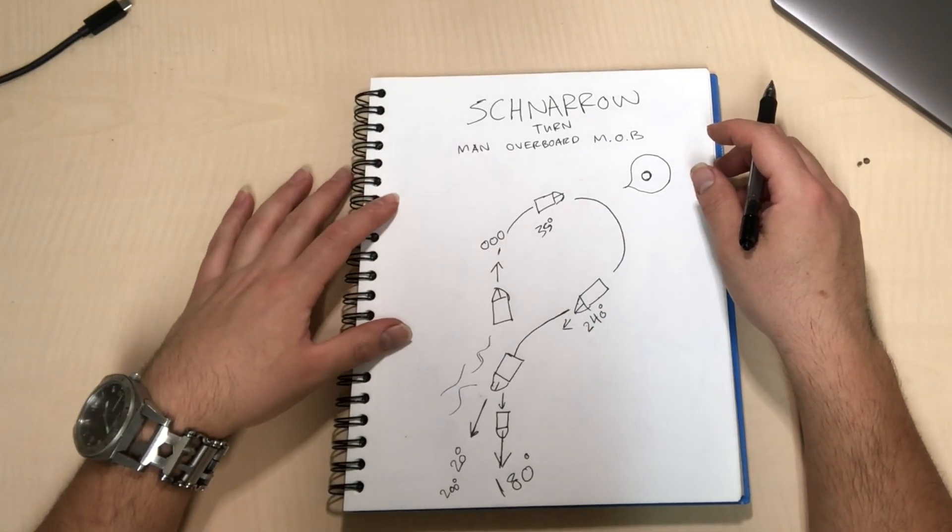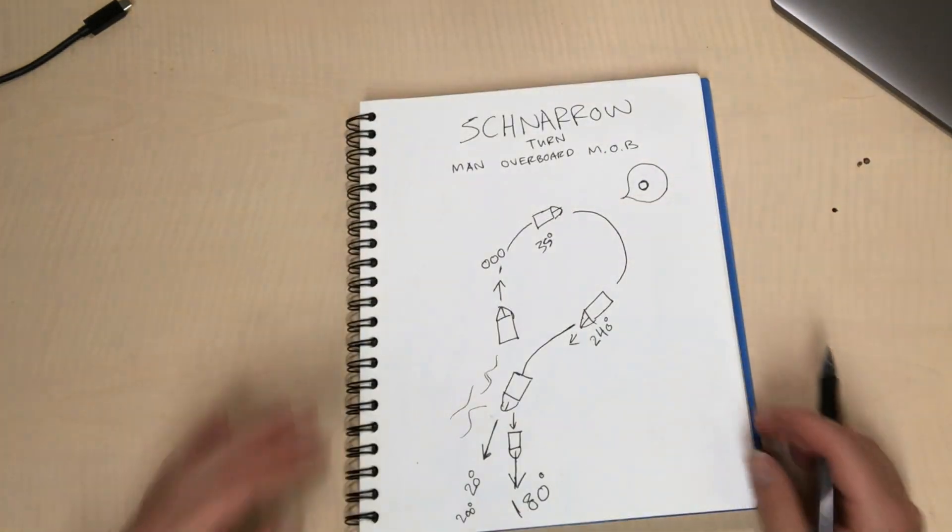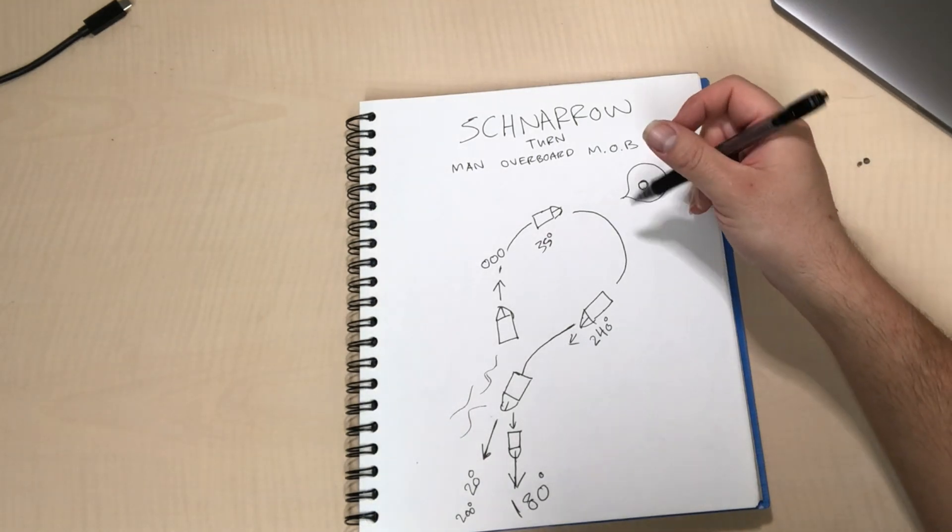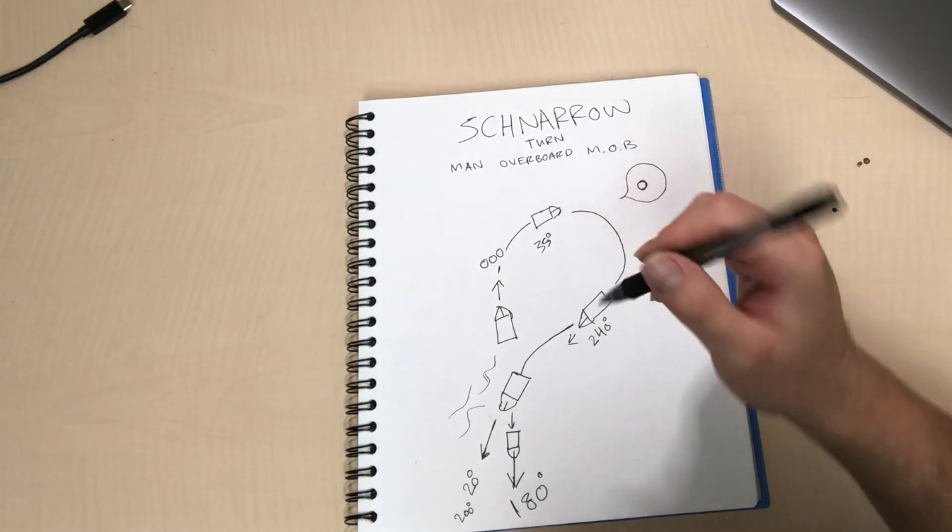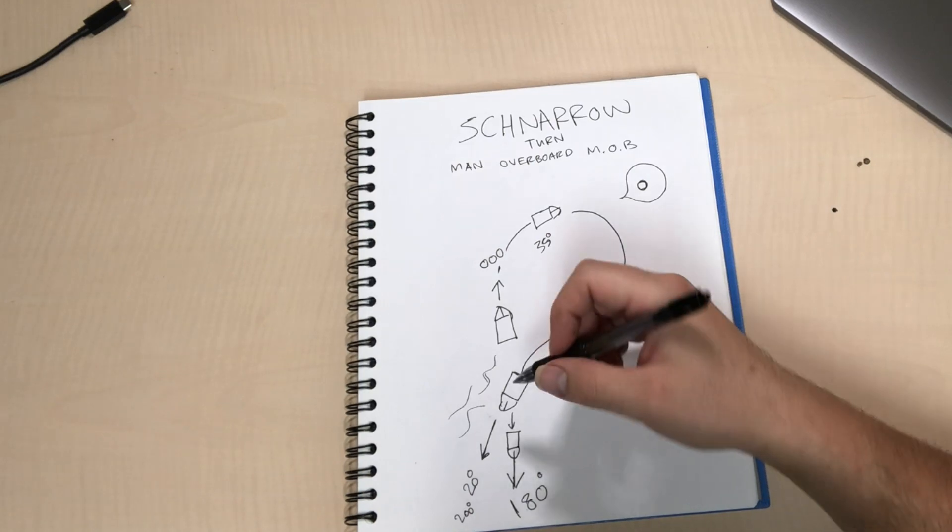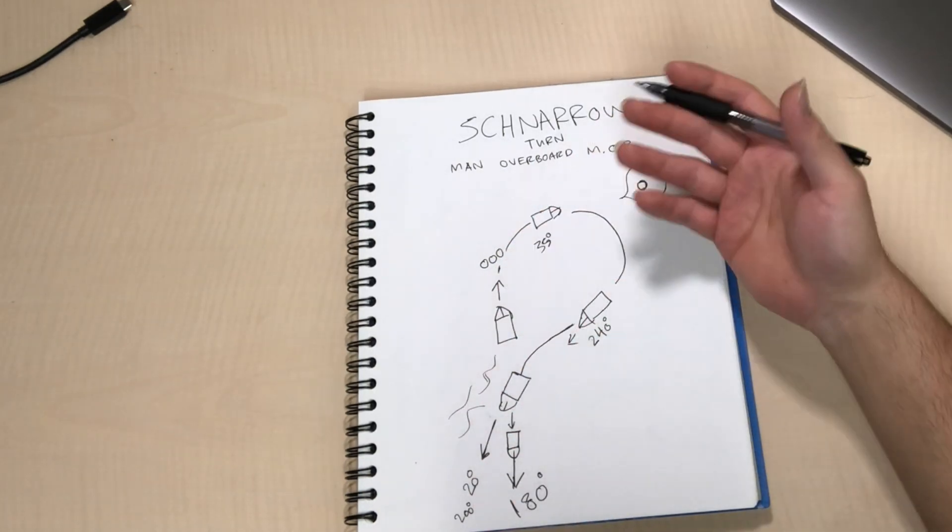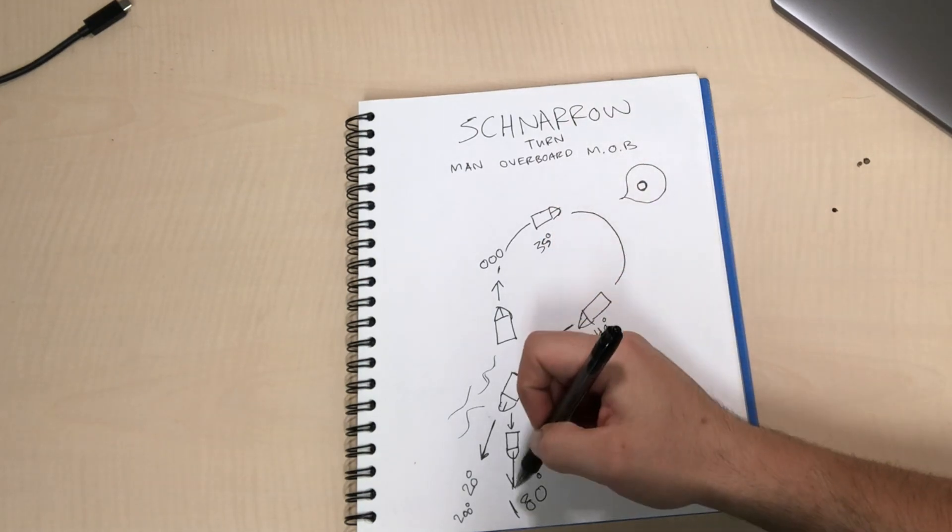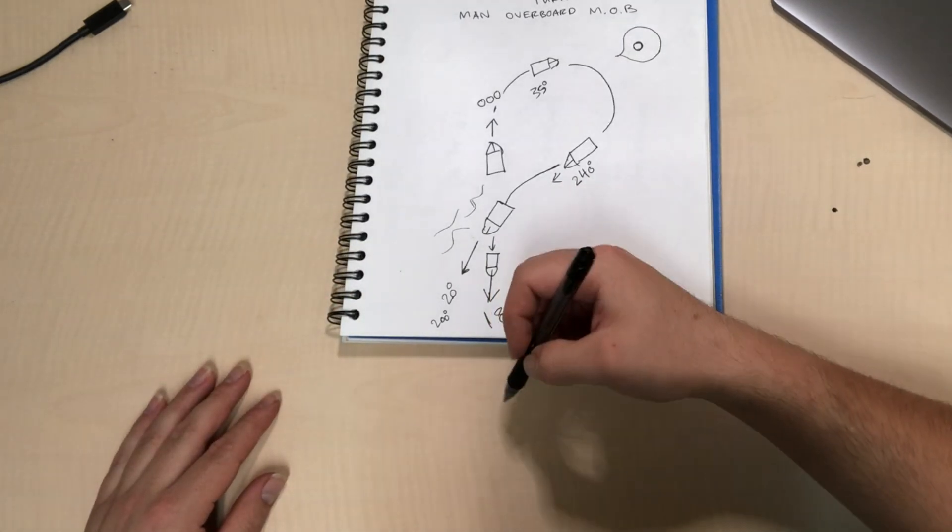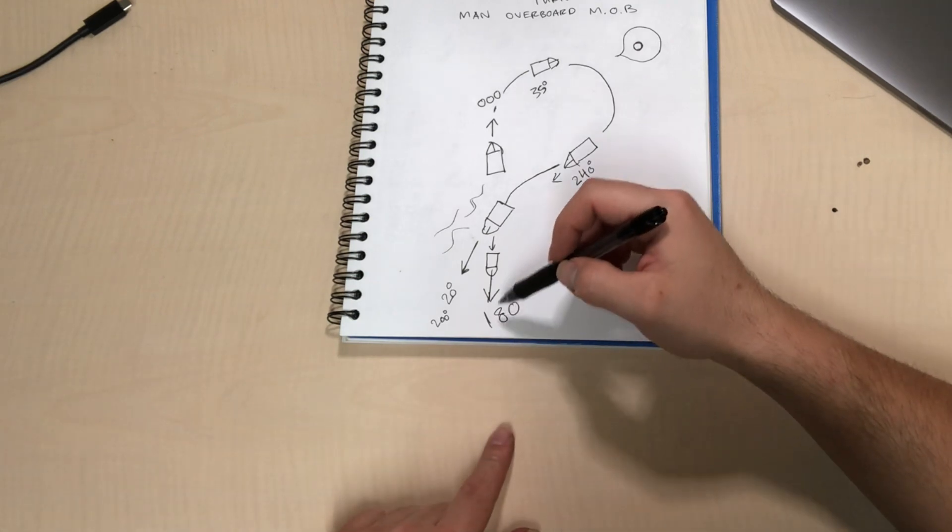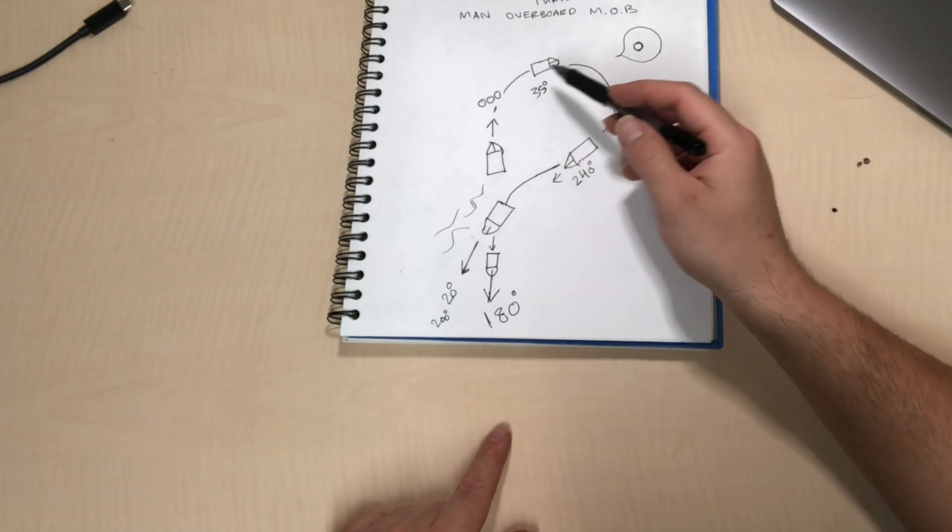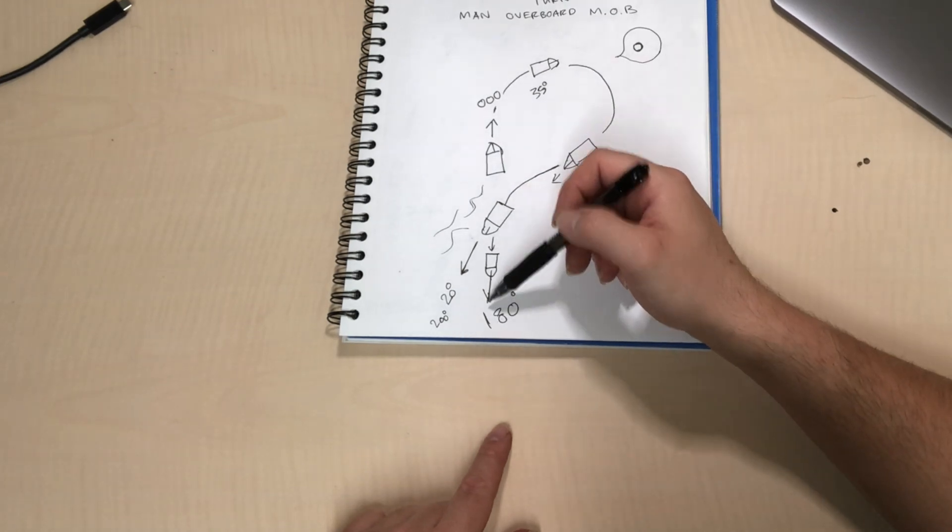But yeah, that's the Scharnow turn man overboard. I believe it's used usually when you know when the person has gone over. So say they just went over 10, 15 minutes ago, then you know the person fell over somewhere back here. Your man overboard went somewhere back here, you guys kept going, and now we know a man's overboard, let's turn around and come back, get on the reciprocal course and you'll be coming at a straight heading towards your man overboard.